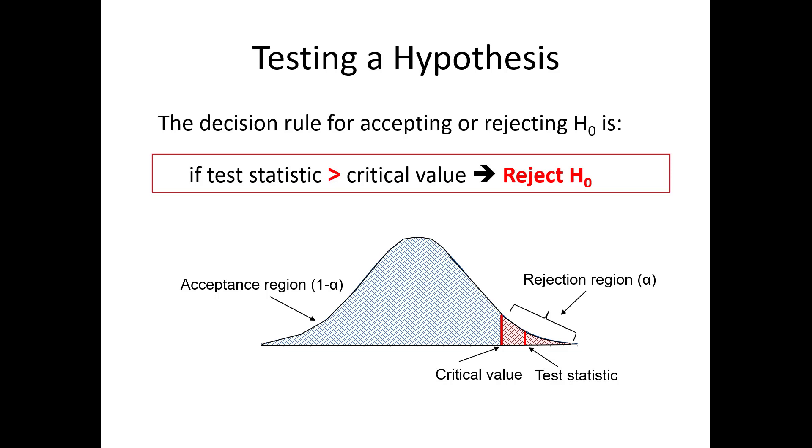Therefore, as the confidence level increases, and alpha decreases, it is harder to reject the null hypothesis. So you are more likely to reject the null hypothesis if you lower your confidence level, but you would also be more likely to make an error.